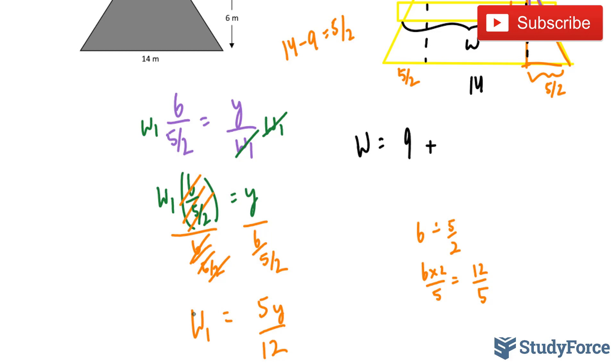So now that we've found this very important equation, we multiply it by 2, because this only represents that bit, but there's another side to it. So we multiply it by 2, 5y over 12, 2 cancels out, this becomes a 6, and our equation for the width is 9 plus 5 over 6y.